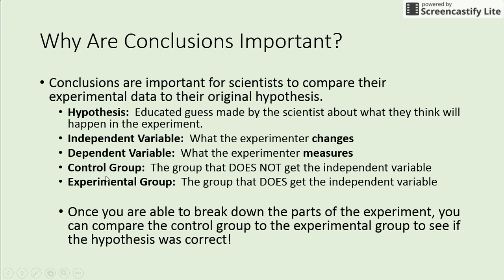Here's a review of some key words — go ahead and write these definitions down in your notes packet. The hypothesis is an educated guess made by the scientist about what they think will happen in the experiment. The independent variable is what the experimenter changes. The dependent variable is what we measure. The control group does not get the independent variable — it's the normal group used for comparison. The experimental group is the group that does get the independent variable — the group we're experimenting on.